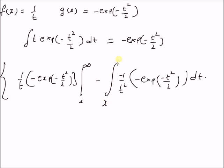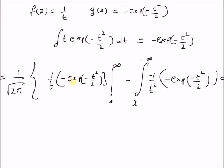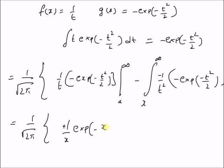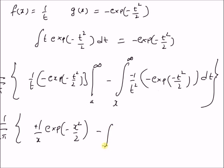Inserting the limits from x to infinity: at infinity this term is clearly 0, and at x we get (1/x) × exp(−x²/2). So the first term becomes (1/√(2π)) × (1/x) × exp(−x²/2), and the second term is the integral from x to infinity of (1/t²) × exp(−t²/2) dt.